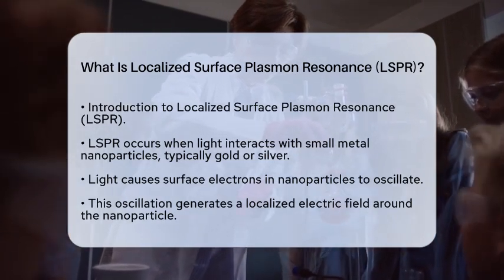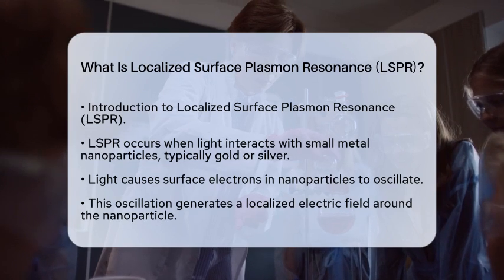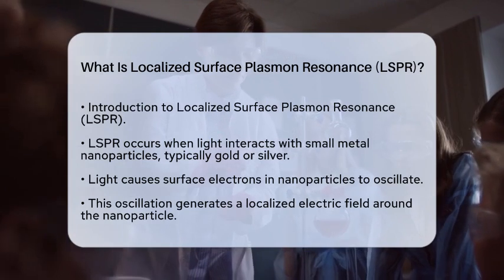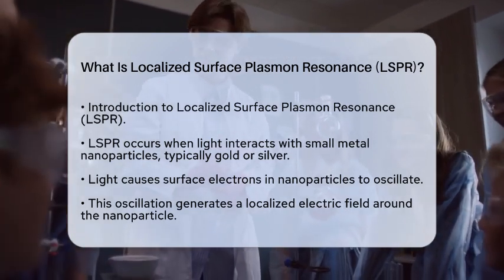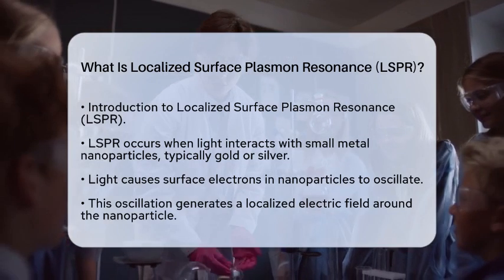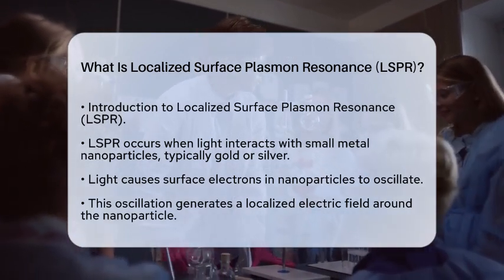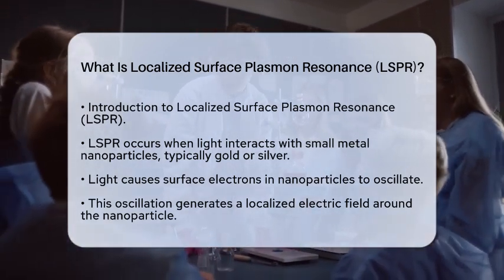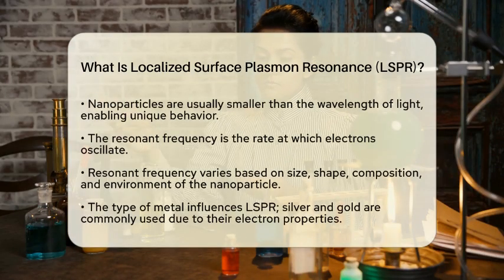So, what exactly happens during LSPR? When light hits these tiny metal particles, it causes the electrons on their surface to oscillate. This oscillation creates a localized electric field around the nanoparticle. The size of these nanoparticles is very important — they are typically smaller than the wavelength of light, which allows for this unique behavior.